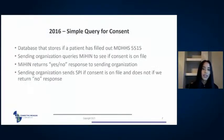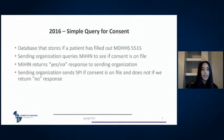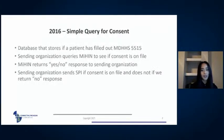Starting at the very beginning of the timeline: we began working on e-consent in 2016, where we saw the need mostly in the behavioral health space. We created a demo of a simple query for consent — organizations with specially protected information (SPI) would send a query to MiHIN asking if Michigan's standard behavioral health consent form was on file. MiHIN would have a database storing this information and respond with yes or no, after which the organization could determine whether they could send information.